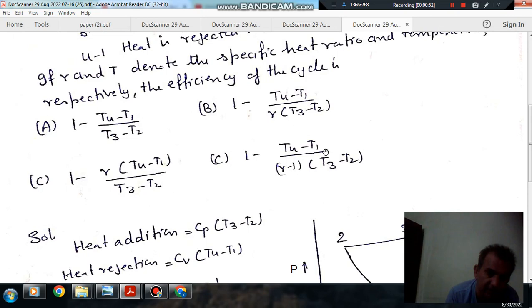Option C, 1 minus gamma T4 minus T1 divided by T3 minus T2. Option D, 1 minus T4 minus T1 divided by gamma minus 1 bracket T3 minus T2.